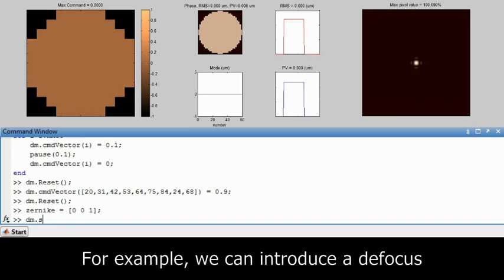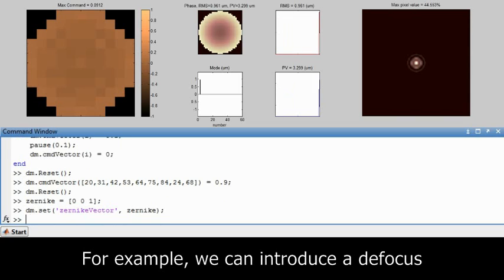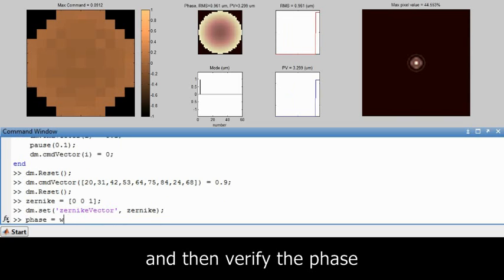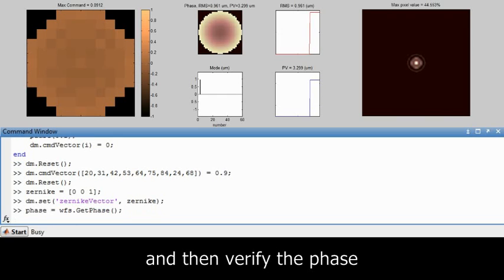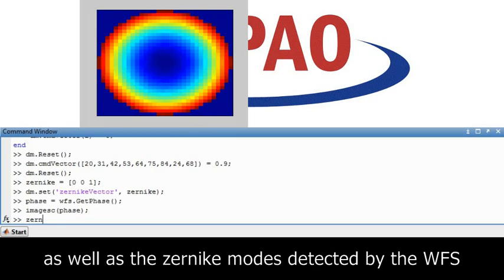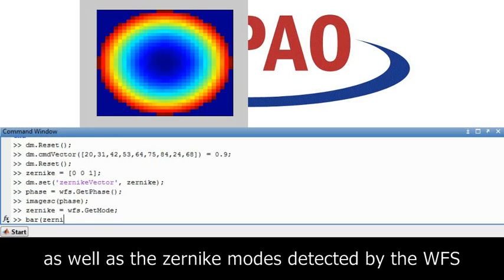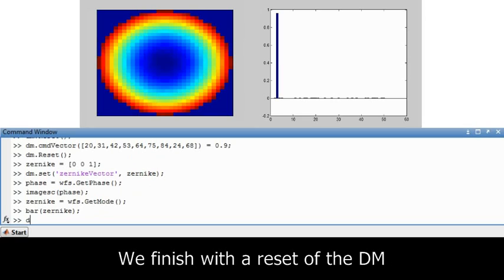The mirror can also be controlled using the Zernike mode basis. Here we introduce some defocus in the mirror. And we can verify our modes by getting the phase from the wavefront sensor, as well as the Zernike modes. We finish once again by resetting the deformable mirror.